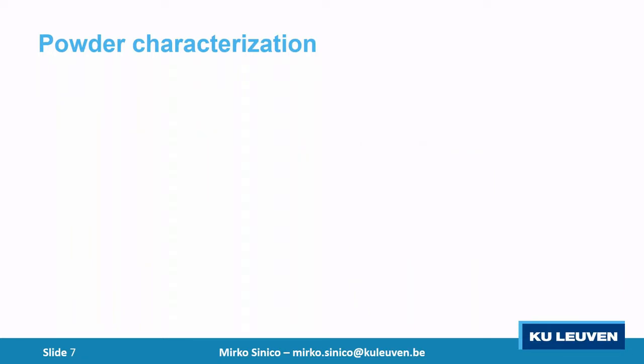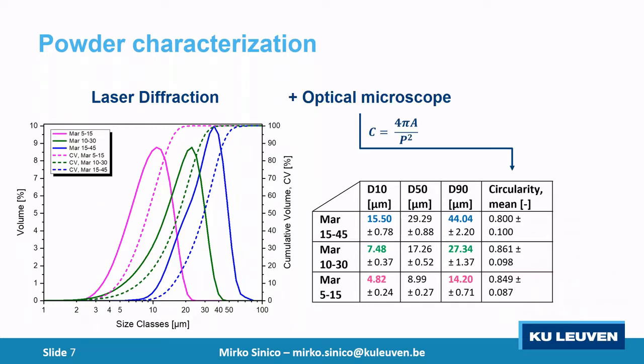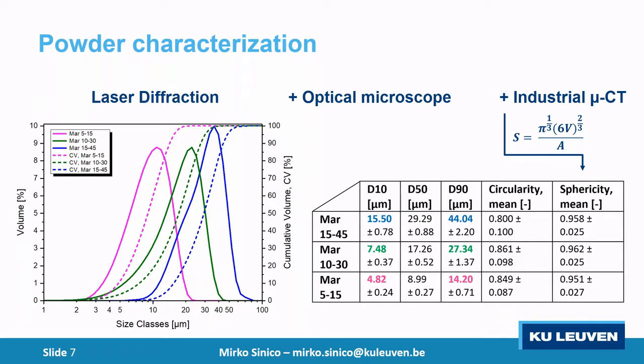For powder characterization, we started with laser diffraction to verify the distribution ranges, then optical microscopy and computer tomography to check the shape of the powder. We wanted the three batches to have more or less similar shape, otherwise we wouldn't know whether influence comes from morphology or size. For all three batches, we confirmed high sphericity and more or less the same values for circularity and sphericity — which is good.